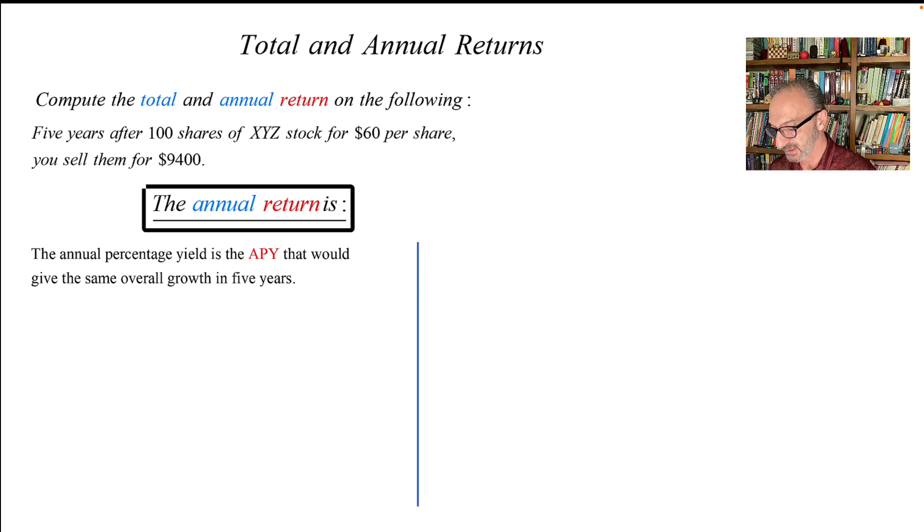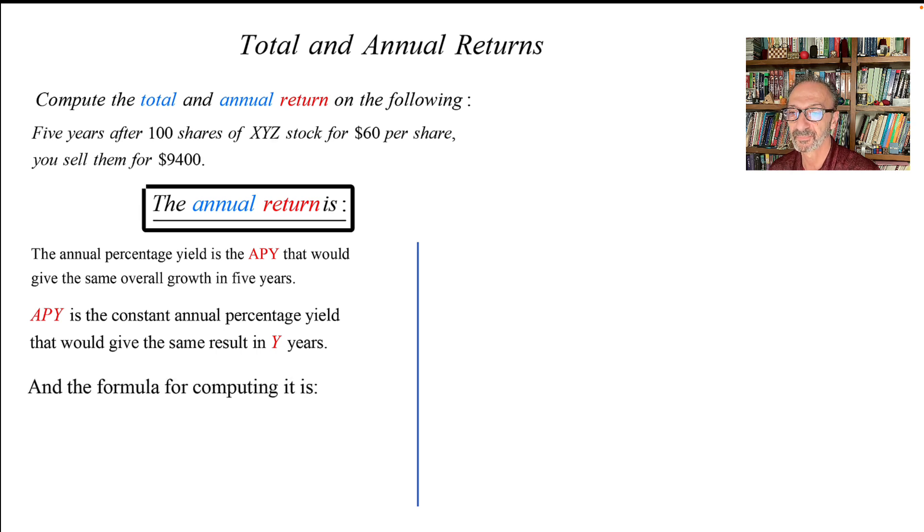The difference is we are looking for the annual percent yield, not the total. That's the main part right here. APY is the constant annual percentage yield that would give the same result in Y years, in five years in our example.